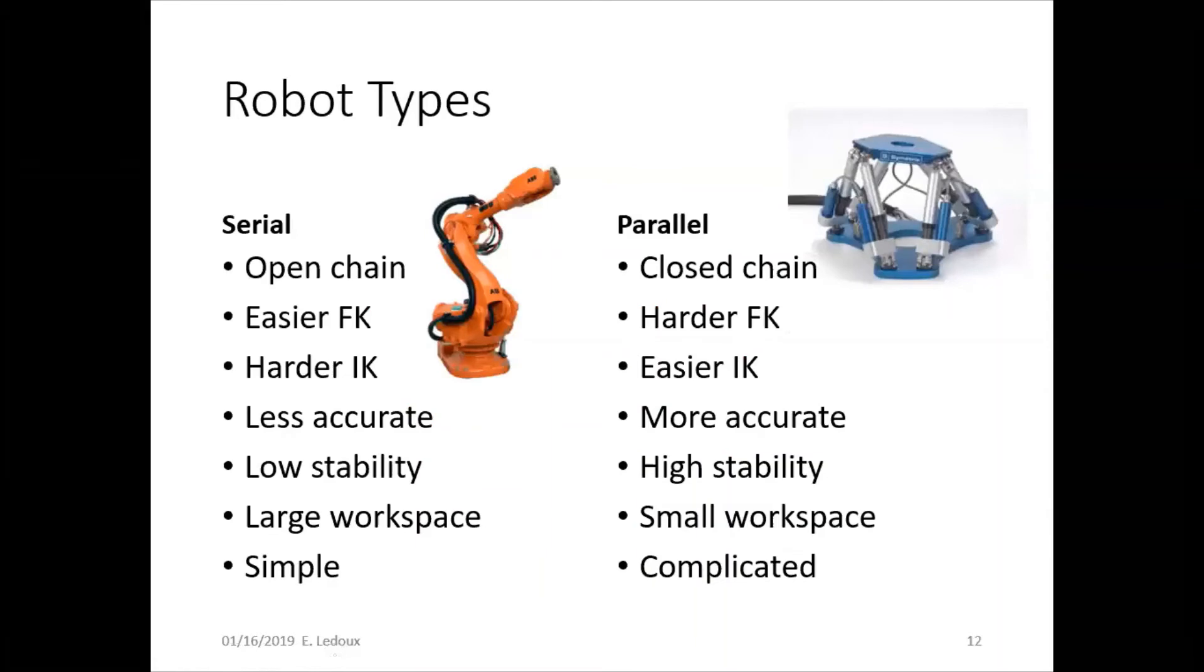And then the two categories of robots are serial and parallel. Serial robots are one giant arm that starts at the base and goes out to the tip with only one attachment point to the ground. Parallel robots have multiple legs, so multiple attachment points to the ground, and then they have a platform on top that is the end effector.